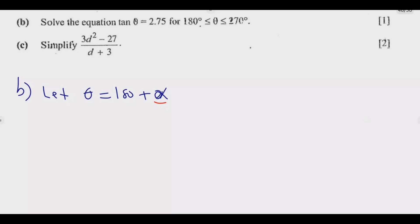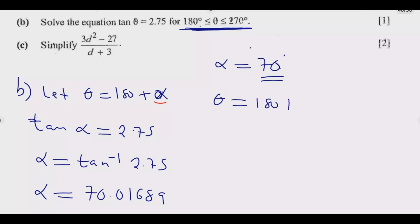We can proceed to solve for alpha. Whenever there is theta, we replace it with alpha for now. So tan alpha equals 2.75. Alpha equals tan inverse 2.75. Using our calculator, the angle equals 70.01689, which is alpha equals 70 degrees. The interval shows the only solution is in the third quadrant. Therefore, theta equals 180 plus 70 degrees, which equals 250. And 250 lies between 180 degrees and 270. That's how you answer this question.